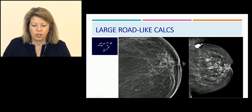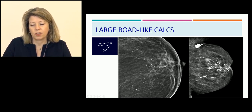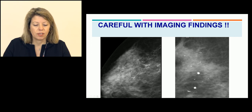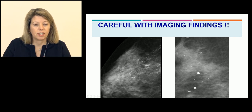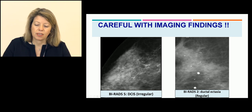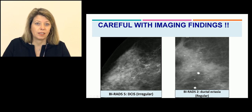Here is an example of large rod-like benign calcifications: they are oriented towards the nipple with ductal orientations, needle shape, very irregular and large — in this case, typically benign (BI-RADS 2). In contrast, in a treated breast with large rod-like calcifications, be careful: although there is still a nipple orientation, the calcifications are segmental, irregular, lower than 0.5 mm — they are not benign. They are typically malignant, suggestive of extensive DCIS, and would be classified as BI-RADS 5. The previous case with regular needle-shape ductal ectasia would be BI-RADS 2.